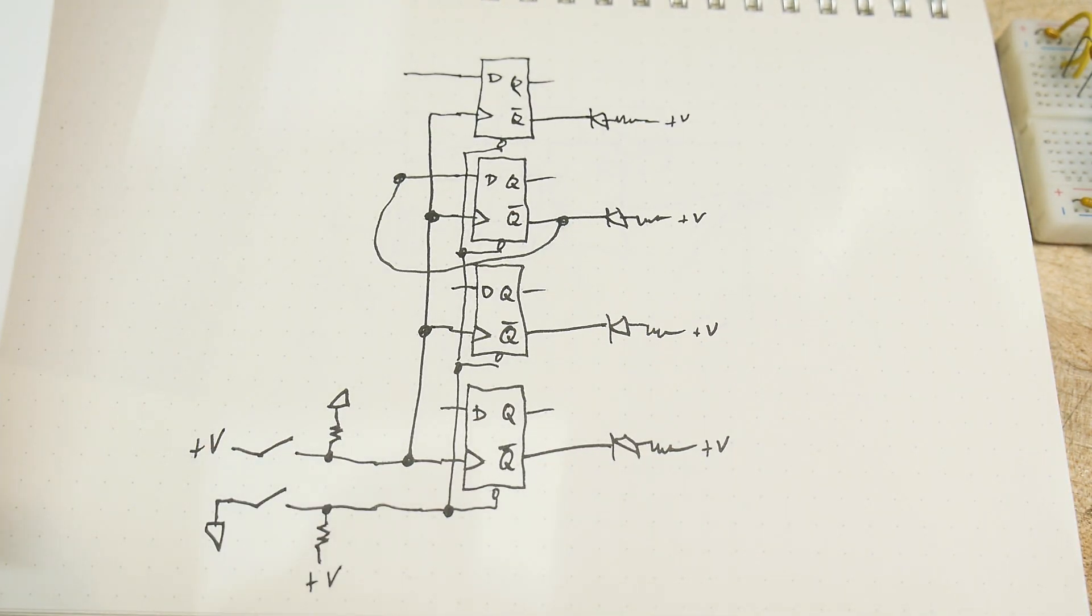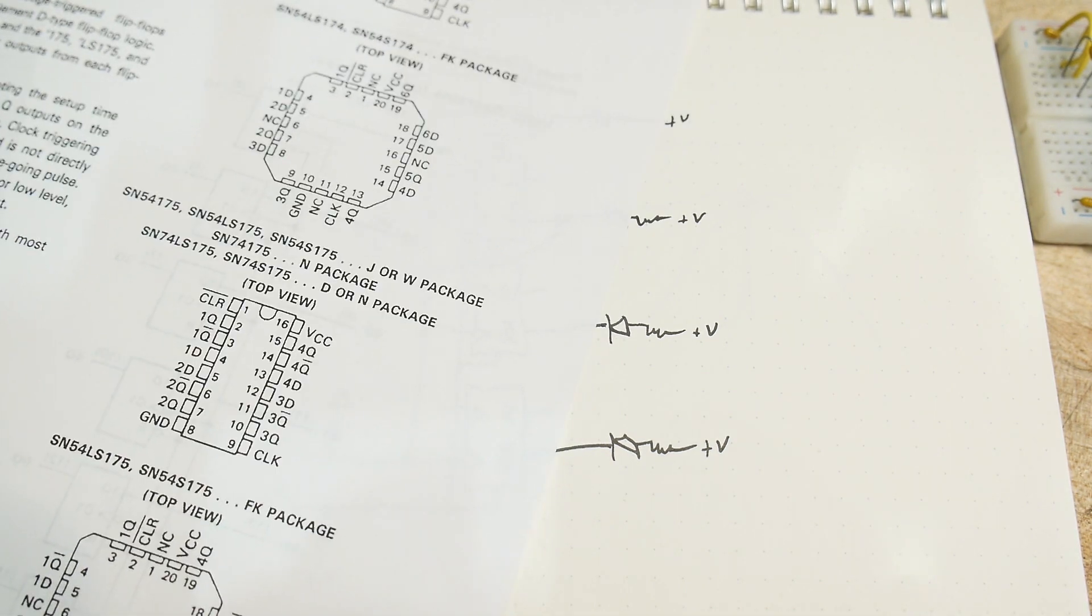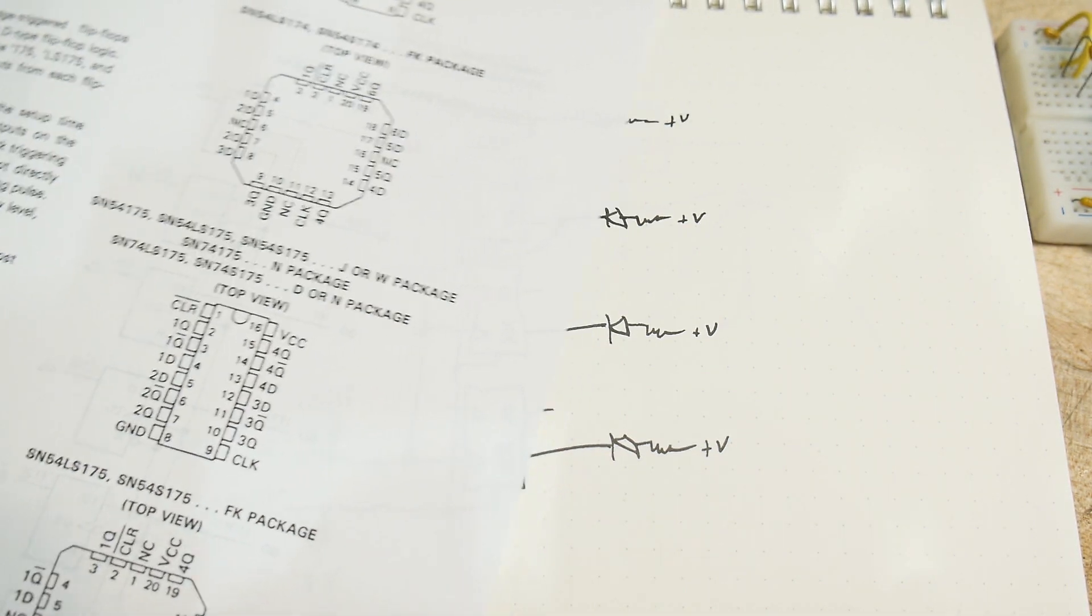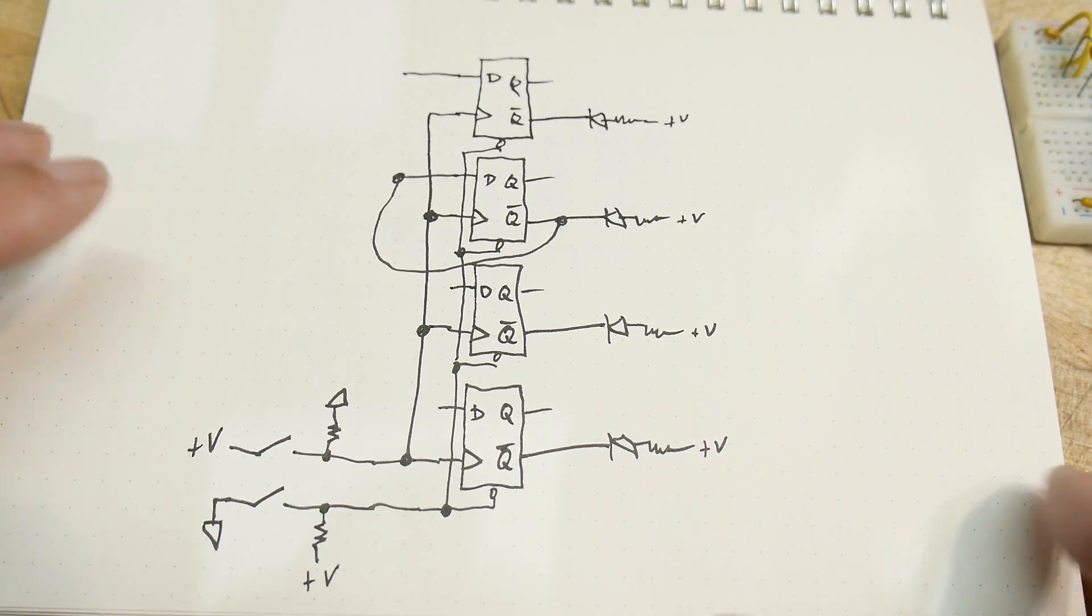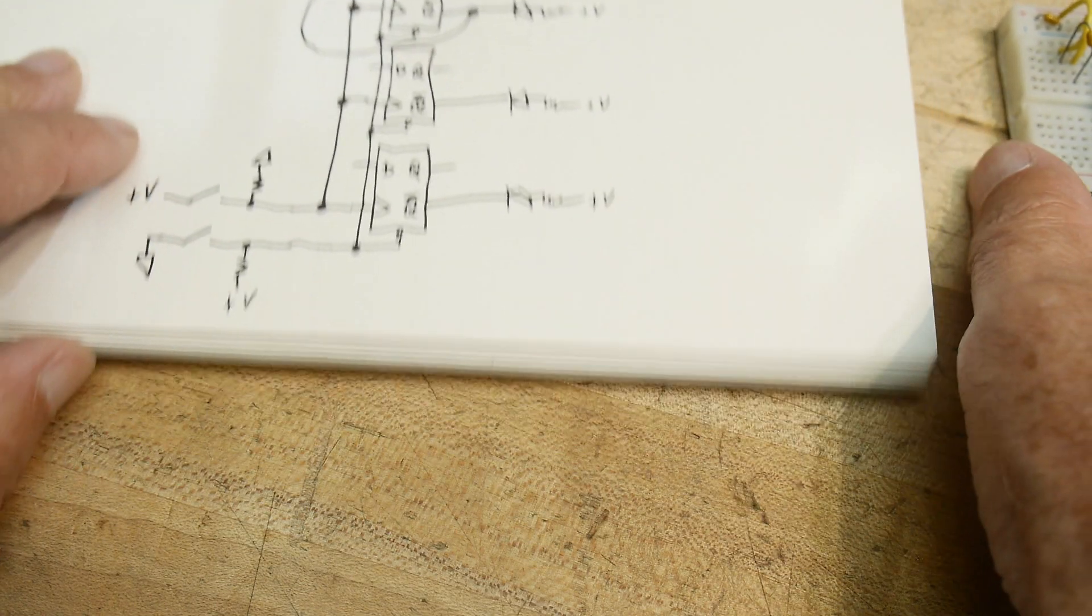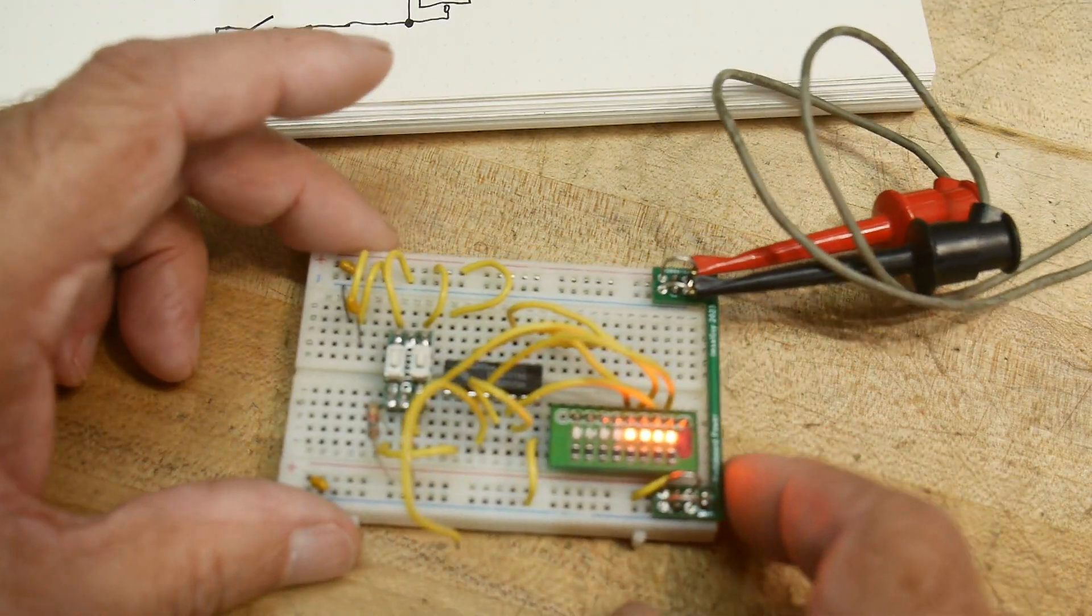What else does it say you could use it for? Pattern generator? Hmm. Not sure about that. But anyway, there you go. It's a fun little part. It's a four-bit latch. D flip-flops.